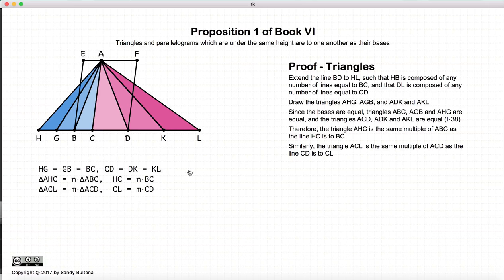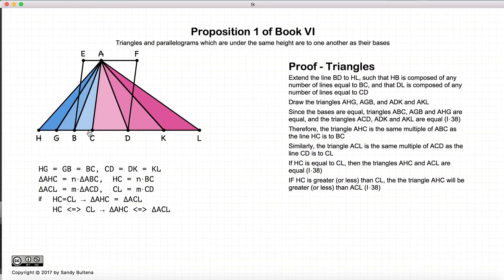I've just rewritten everything here to be clean and tidy. So here are our conditions. Now, if HC were to equal CL and it has the same height, then this larger blue triangle would equal the larger pink triangle. Proposition 38, Book 1. If HC was less than CL, then the area of this larger blue triangle would be less than the area of the pink triangle.